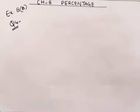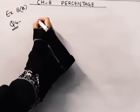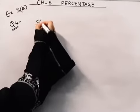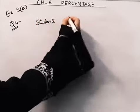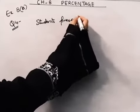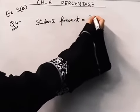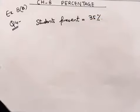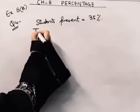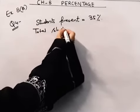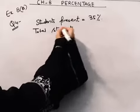Question number four: On a rainy day, 35% of a class of 40 students were present. We have to find the number of students absent on that day. This means that 35% of the students were present.